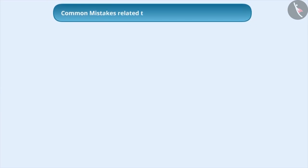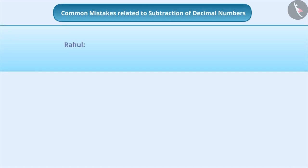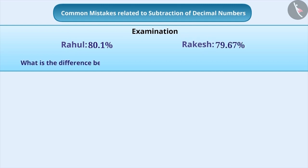Now, let us see some common mistakes done by students while performing subtraction of decimal numbers. Let us understand this with the help of an example. Rahul and Rakesh participated in an exam. Rahul got 80.1% of marks in the exam and Rakesh got 79.67%. What is the difference between the percentages they both obtained?